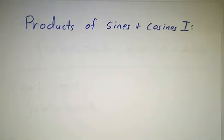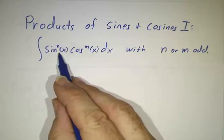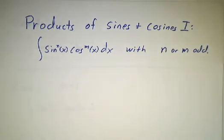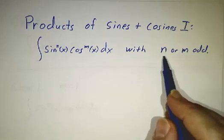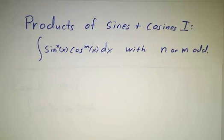The most common type of trig function that you have to integrate is a product of sines and cosines — something of the form the integral of sin to some power times cos to some power dx. In this video, we're going to talk about how to do that when n is odd or m is odd. When n and m are both even, it's more complicated, and we'll get to that in the next video.